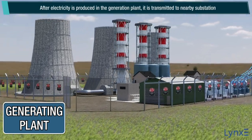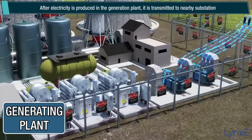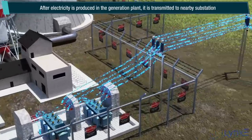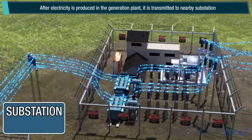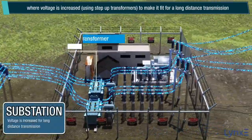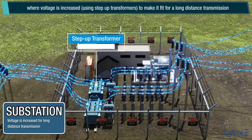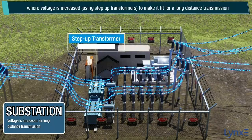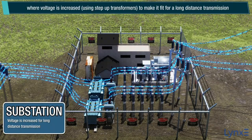After electricity is produced in the generation plant, it is transmitted to a nearby substation, where voltage is increased using step-up transformers, to make it fit for long-distance transmission.